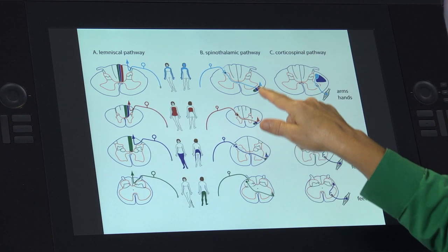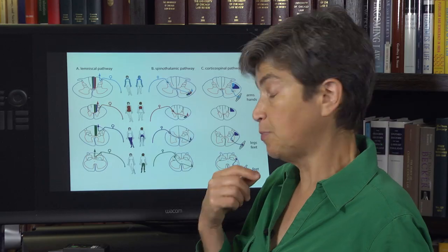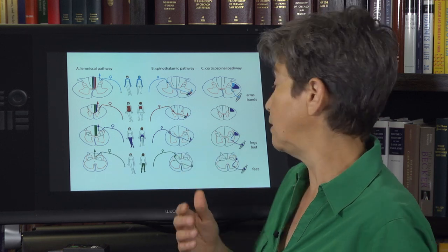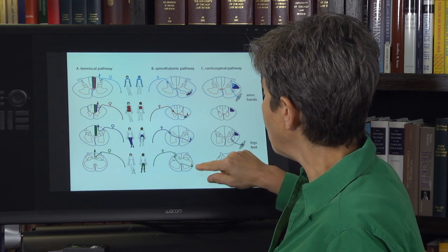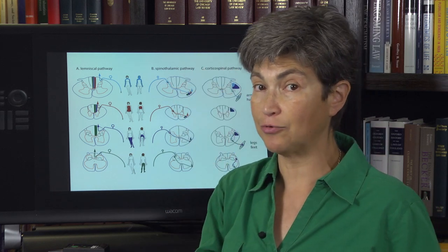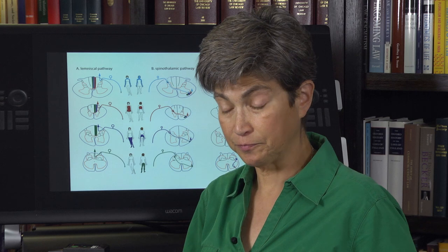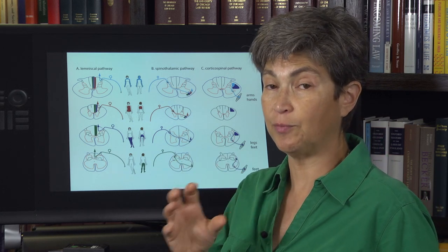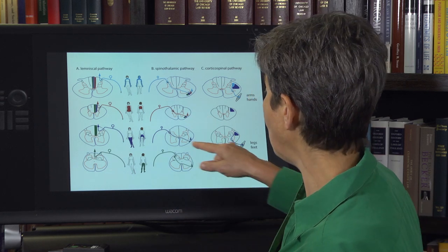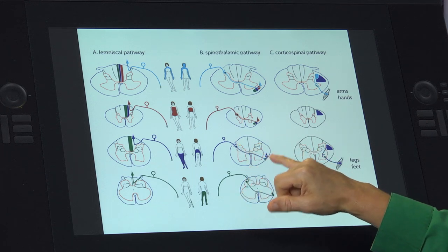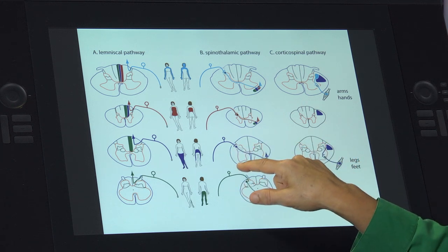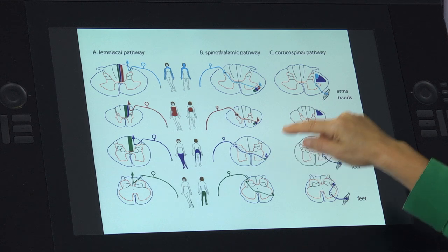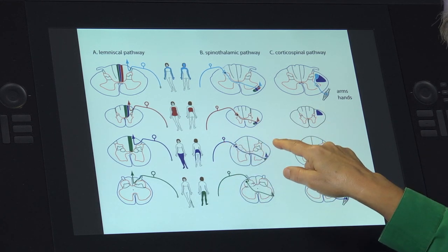This information travels rostrally in the spinothalamic tract. There is a somatotopy but it's not clinically significant, as it's a small tract and unlikely to have a lesion affecting one area but not another. All this information travels contralateral to the part of the body that it serves — with one exception. Below the level of the segment, information travels contralaterally. But at the level of the segment, information is in the process of crossing, creating a vulnerability where a lesion in the middle region will block information from both sides.